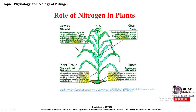Nitrogen is also found in proteins and enzymes in the roots, which help nutrients and water to be taken up by the plants. In plant growth and development, nitrogen is an important part of compounds which regulate growth. Nitrogen is also a main structural component of proteins stored in the grains, fruits, and seeds of plants.